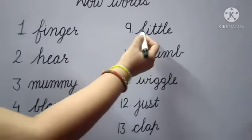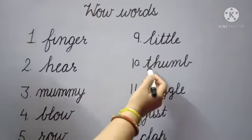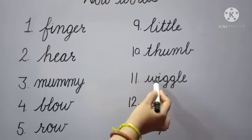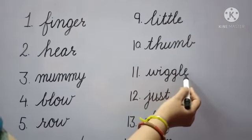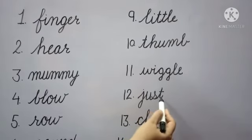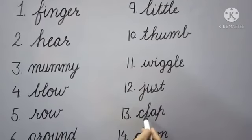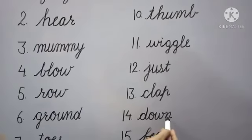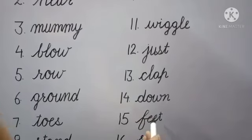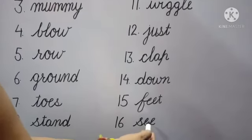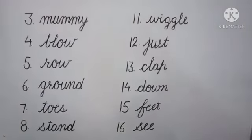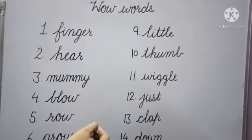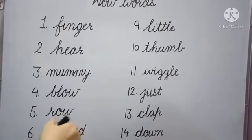Repeat again: L-I-T-T-L-E, little. T-H-U-M-B, thumb. W-I-G-G-L-E, wiggle. J-U-S-T, just. C-L-A-P, clap. D-O-W-N, down. F-E-E-T, feet. S-E-E, see. So dear kids, learn and write these wow words in your English fair notebook. OK, thank you. Have a nice day!